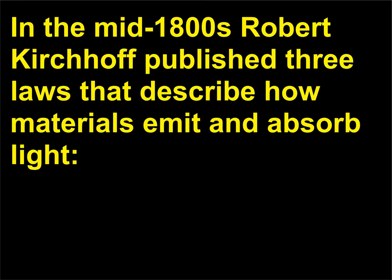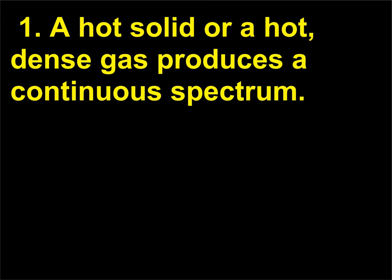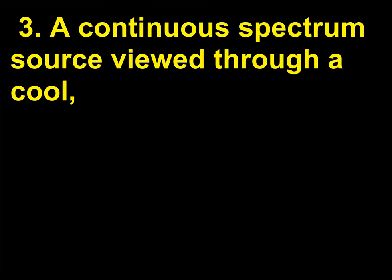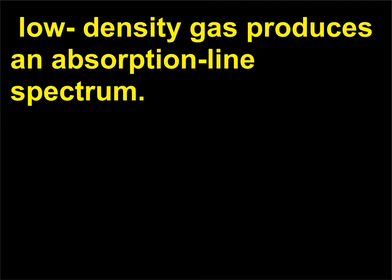In the mid-1800s Robert Kirchhoff published three laws that describe how materials emit and absorb light. One: a hot solid or a hot, dense gas produces a continuous spectrum. Two: a hot, low-density gas produces an emission line spectrum. Three: a continuous spectrum source viewed through a cool, low-density gas produces an absorption line spectrum.